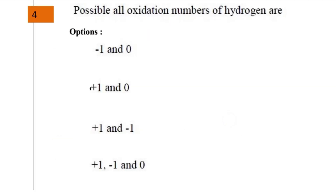Next question: what are all the possible oxidation numbers of hydrogen? The options were: -1 and +1 and 0; +1 and 0; +1 and -1; and +1, -1, and 0. The answer is +1, -1, and 0. The oxidation number of hydrogen in regular compounds is +1; when bonded with a metal it is -1; and as hydrogen is a neutral element, its oxidation number can also be 0. So option 4 is correct.